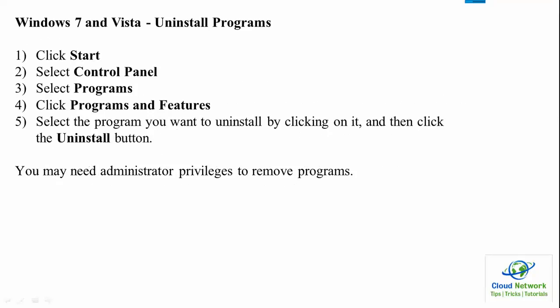For uninstalling Java in Windows 7, go to the Start menu, then Control Panel, then Programs, then Programs and Features. Select the program you want to uninstall by clicking it, then click the Uninstall button. Note that you need to be logged in with an administrator account. If you are logged in with a normal account without privileged permissions, it will ask for the administrator password. To avoid this error, log in as administrator, which gives full permission to uninstall any programs.